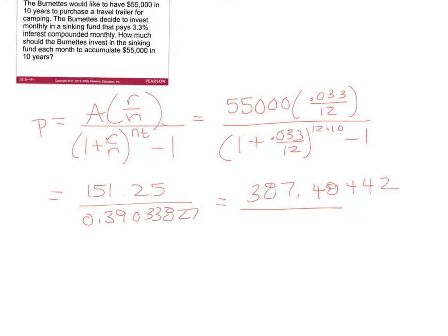Usually you round to two decimal places because it's money, but this gets a little confusing — do not follow traditional rounding rules here. If you round down to $387.48 and make that payment for 10 years, you're not going to have enough money; you'll be slightly below $55,000. In these situations we always round up to the nearest cent, so we round up to $387.49 to guarantee you have all the money you need in the account.